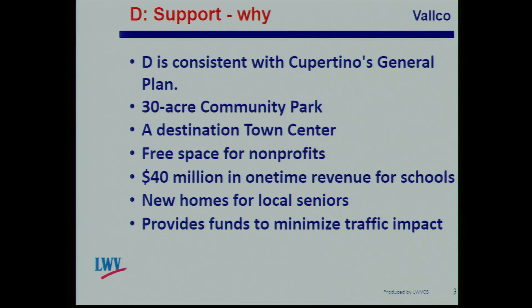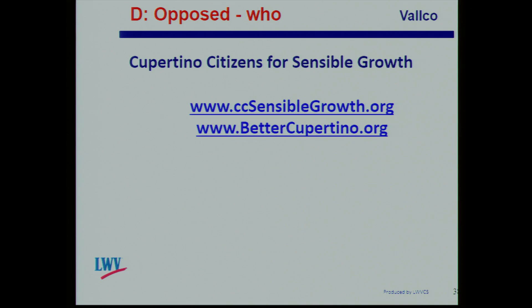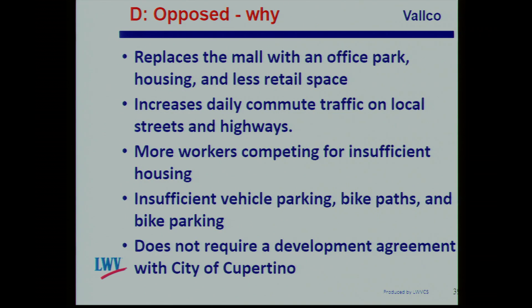The people in favor of D are very much the same list as the people against C. They say D is consistent with Cupertino's general plan, it offers a 30-acre community park, a destination town center, free space for non-profits, $40 million in one-time revenue for schools, new homes for local seniors, and funds to minimize traffic impact. The people opposed to D are the people in favor of C. They say this replaces the mall with an office park, limited retail, and housing; it significantly increases daily commuter traffic; there will be insufficient vehicle parking, bike paths, and bike parking; and it doesn't require a development agreement with the city of Cupertino.